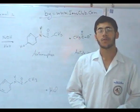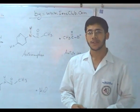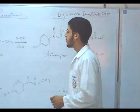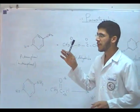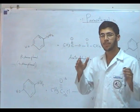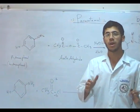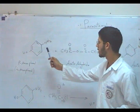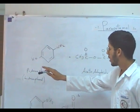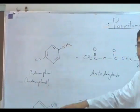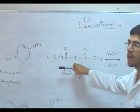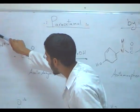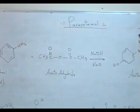The synthesis of this drug is very simple, by a very common reaction, which is the conversion of an amine into an amide. As you can see, we can react para-aminophenol with acetic anhydride to convert the amine group into an amide group.